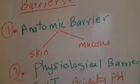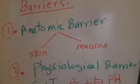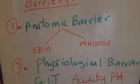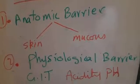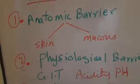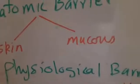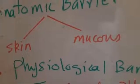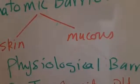The anatomic barrier is composed of skin on the outside. As you know, the skin is an immune organ, as the pH of the skin is between 3 and 5, and this does not allow microorganisms to grow.